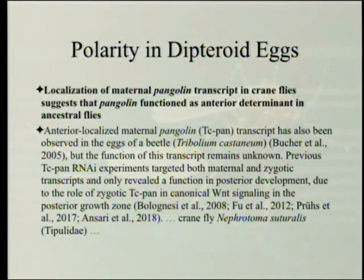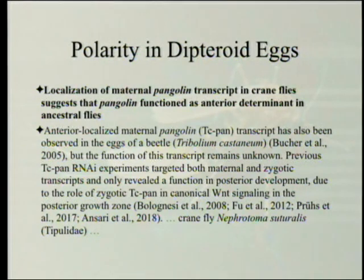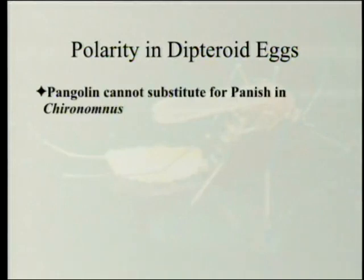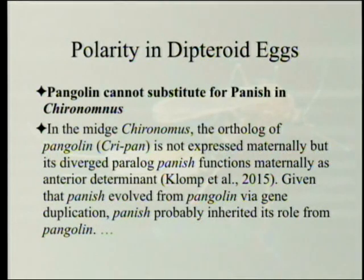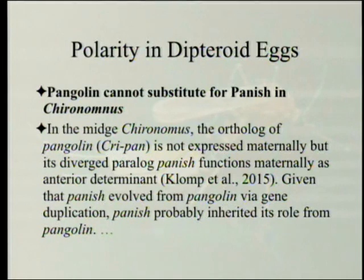The function of this transcript remains unknown. Previous TCF-PAN RNAi experiments targeted both maternal and zygotic transcripts and only revealed a function in posterior development due to the role of zygotic TC-PAN in canonical WNT signaling in the posterior growth zone — the other ones tell you where the head is going to be, while this one apparently tells you where the tail is going to be. Pangolin cannot substitute for panish in Chironomus, because in Chironomus the orthologue of pangolin (CrPAN) is not expressed maternally, but its diverged paralog panish functions maternally as anterior determinant. Given that panish evolved from pangolin via gene duplication, panish probably inherited its role from pangolin.